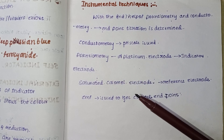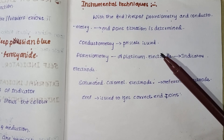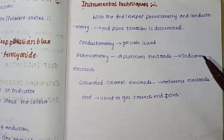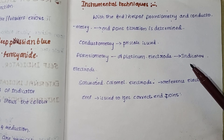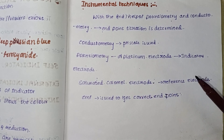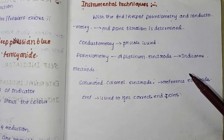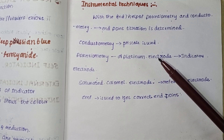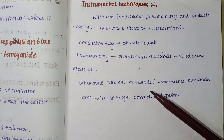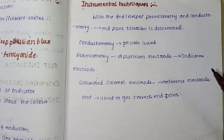In potentiometry, two electrodes are used. The platinum electrode serves as the indicator electrode. The saturated calomel electrode serves as the reference electrode. Please remember: in potentiometry, the platinum electrode is the indicator electrode, while the saturated calomel electrode is used only for reference.